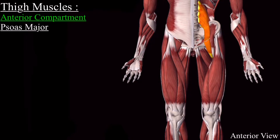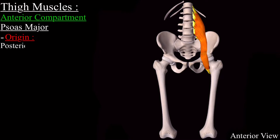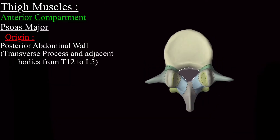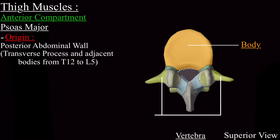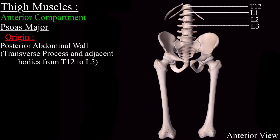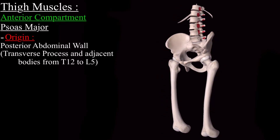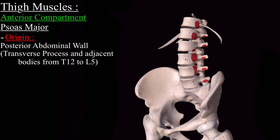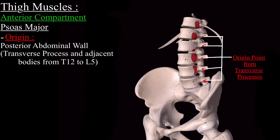In this video, we will limit our discussion to the psoas major muscle. The psoas major muscle originates on the posterior abdominal wall. To be more specific, it originates from the transverse processes and bodies of vertebrae from T12 to L5. This shows isolated vertebrae with a superior view — the body of the vertebrae and the transverse processes. The psoas major muscle originates from the transverse processes of the vertebrae T12 to L5 and the adjacent bodies of those vertebrae.